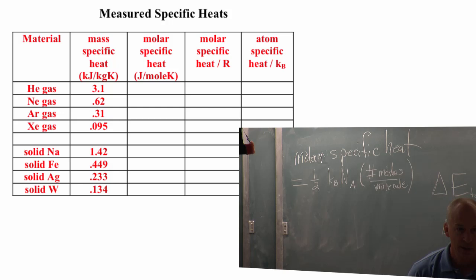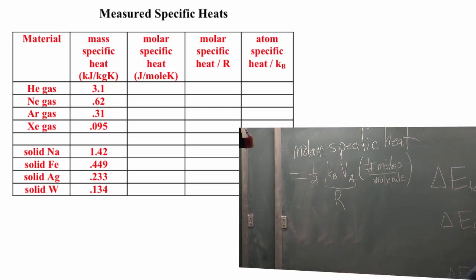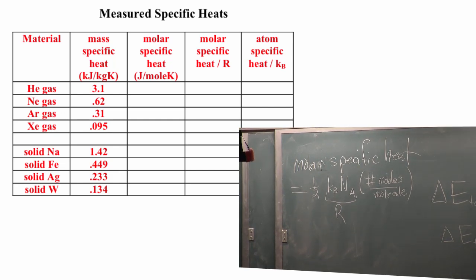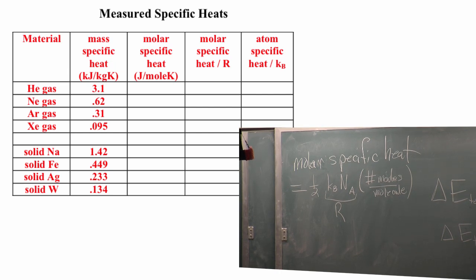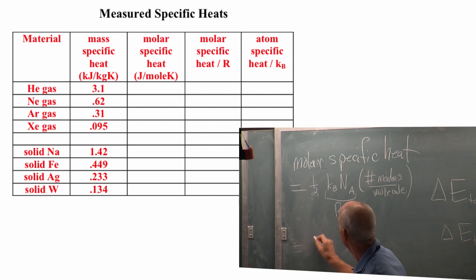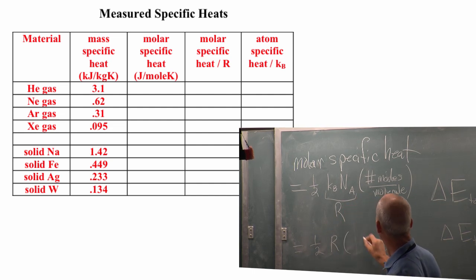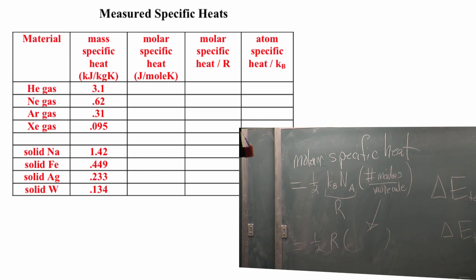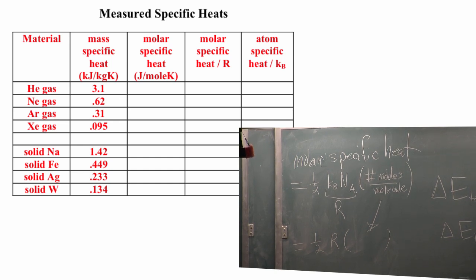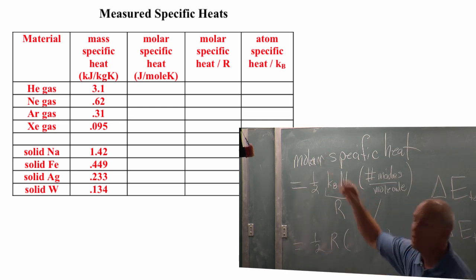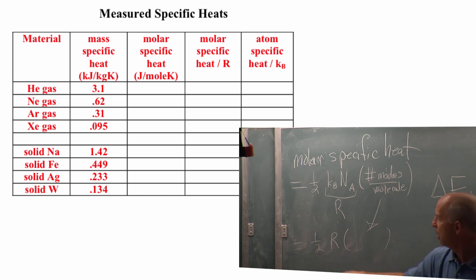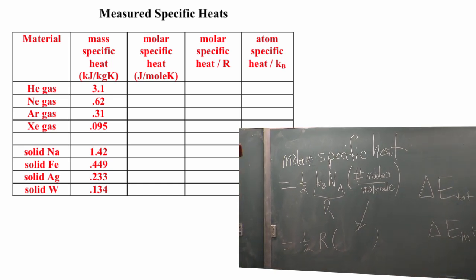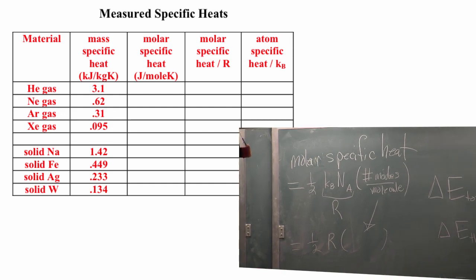So what is R? R is a gas constant, which you know and love. In fact, it's exactly that. R is Boltzmann's constant times Avogadro's number. That's what the gas constant is. They're the same number. So this is just one-half R times the number of modes per molecule. That's the molar specific heat. What if I divide that by R?